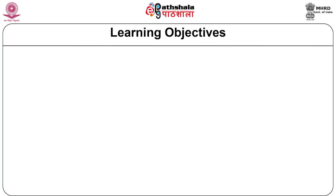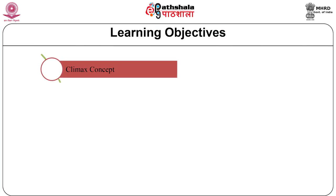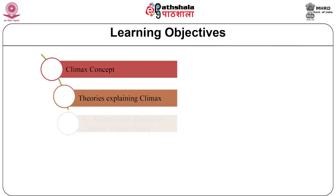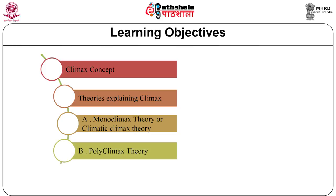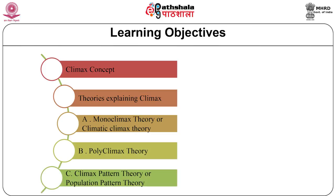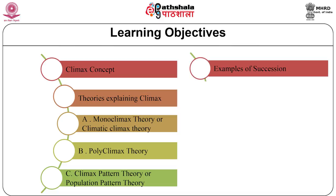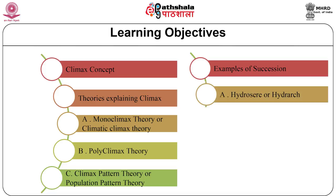The learning objectives of this module are: characteristics of climax, theories explaining climax — the monoclimax theory, polyclimax theory, and climax pattern theory or population pattern theory. Then we will be talking about the examples of succession, that is the hydrosere or hydrarch and xerosere or xirach.